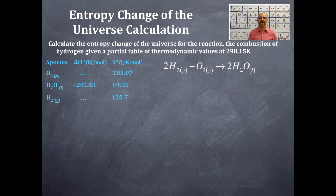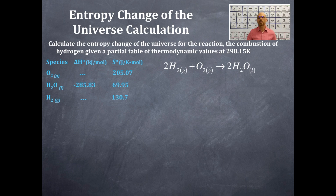Here is our partial data table with species of oxygen, water, and hydrogen. Water is in the liquid state, oxygen and hydrogen are in the gaseous state — two elements in their standard states and one compound. The vertical columns show enthalpy changes in kilojoules per mole and S-naught values in joules per Kelvin·mole.